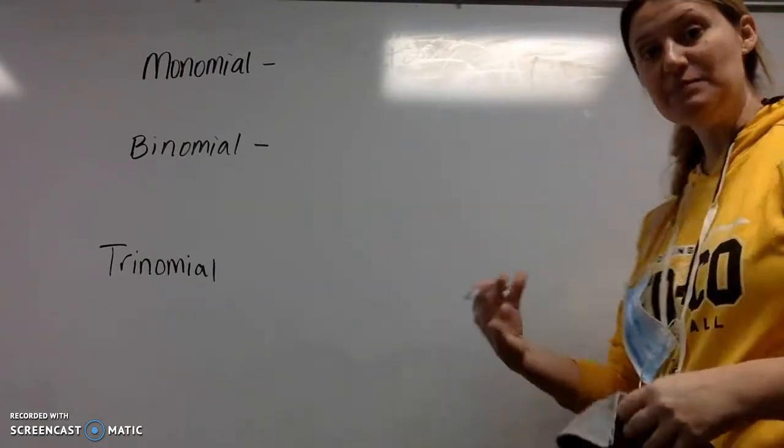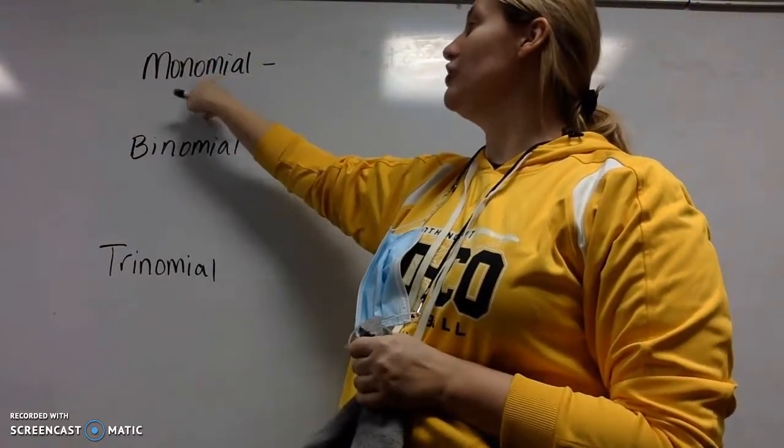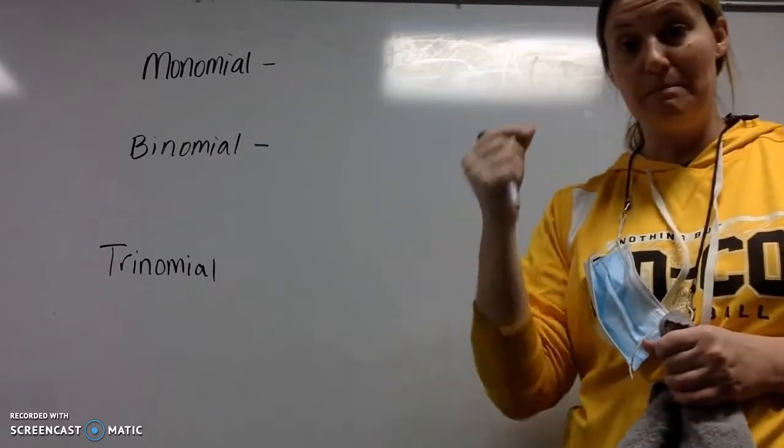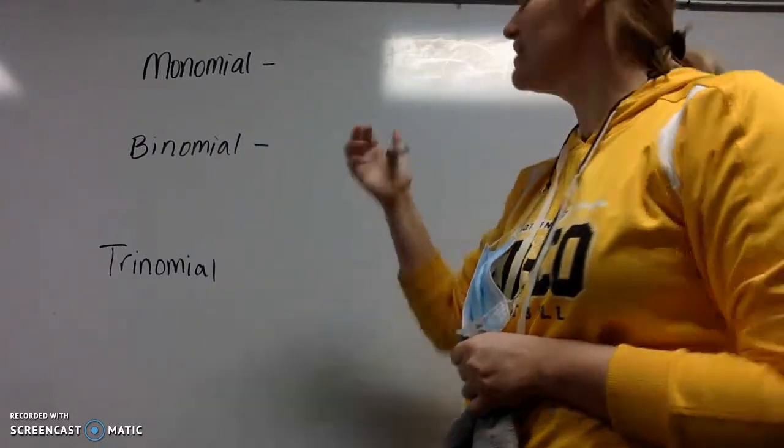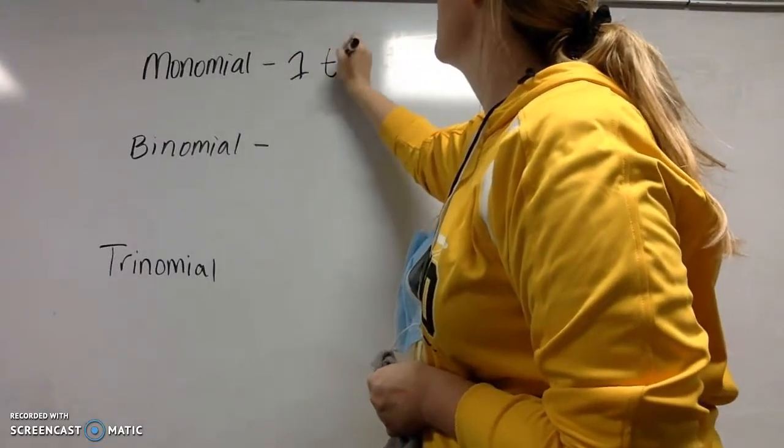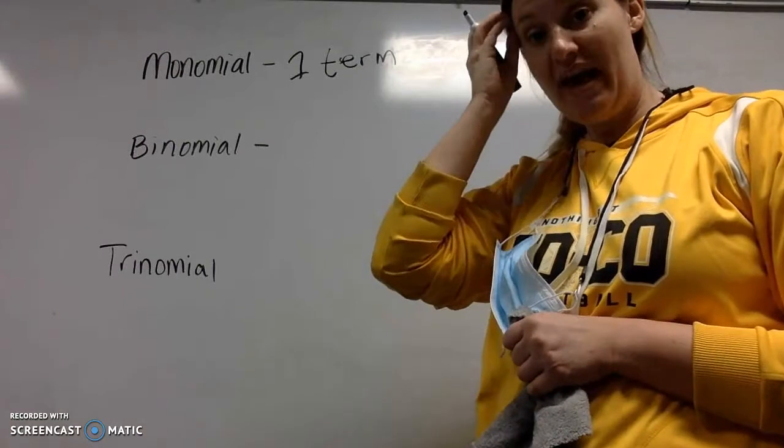So now if we break down our types of polynomials, the first one we have is a monomial. Again, nomial means terms. Mono means one. So a monomial is a polynomial with one term.